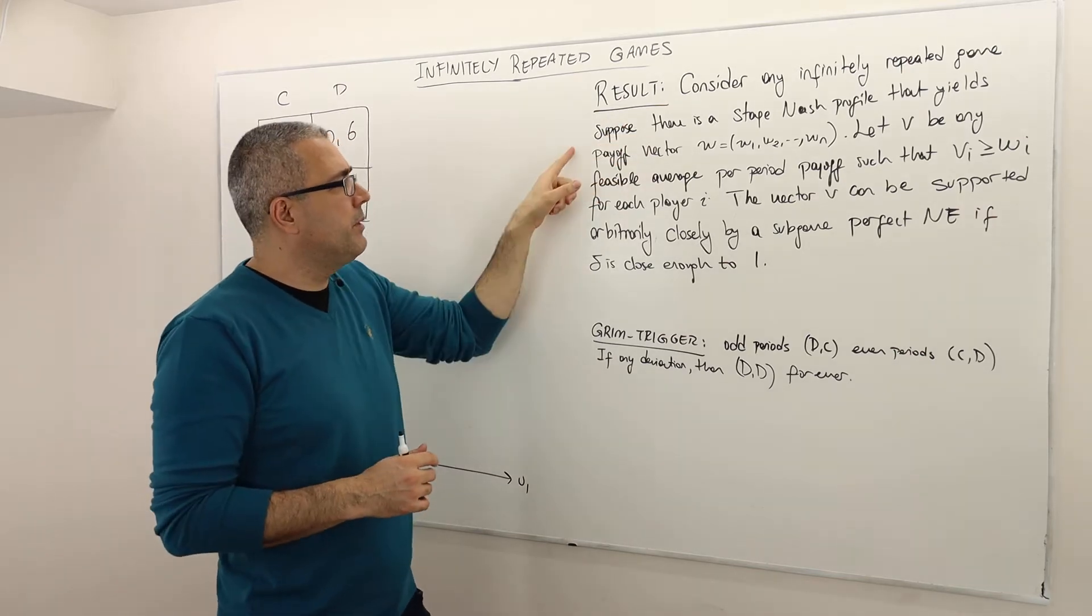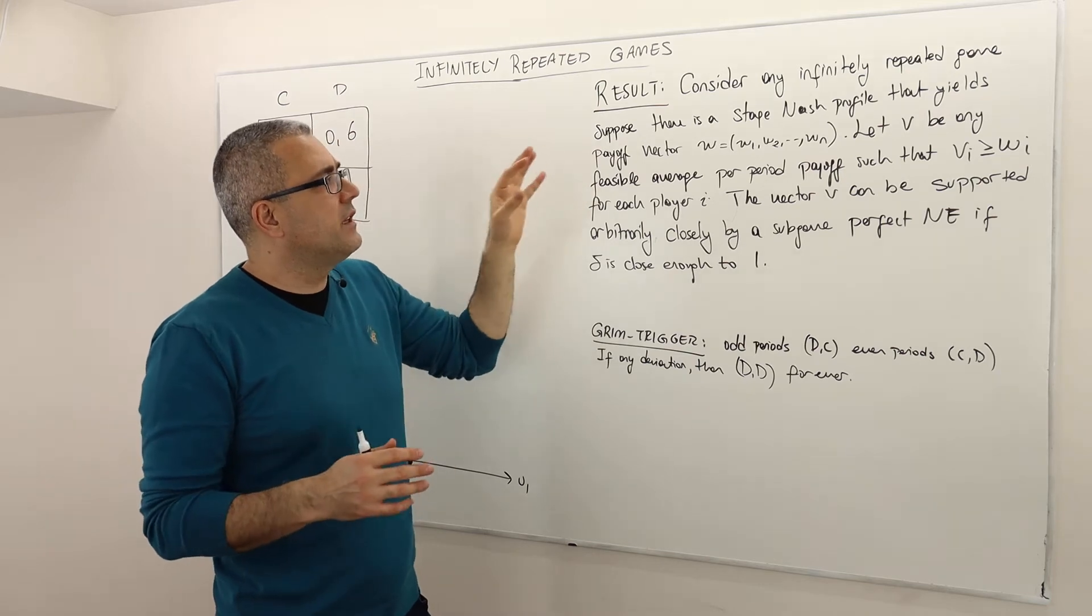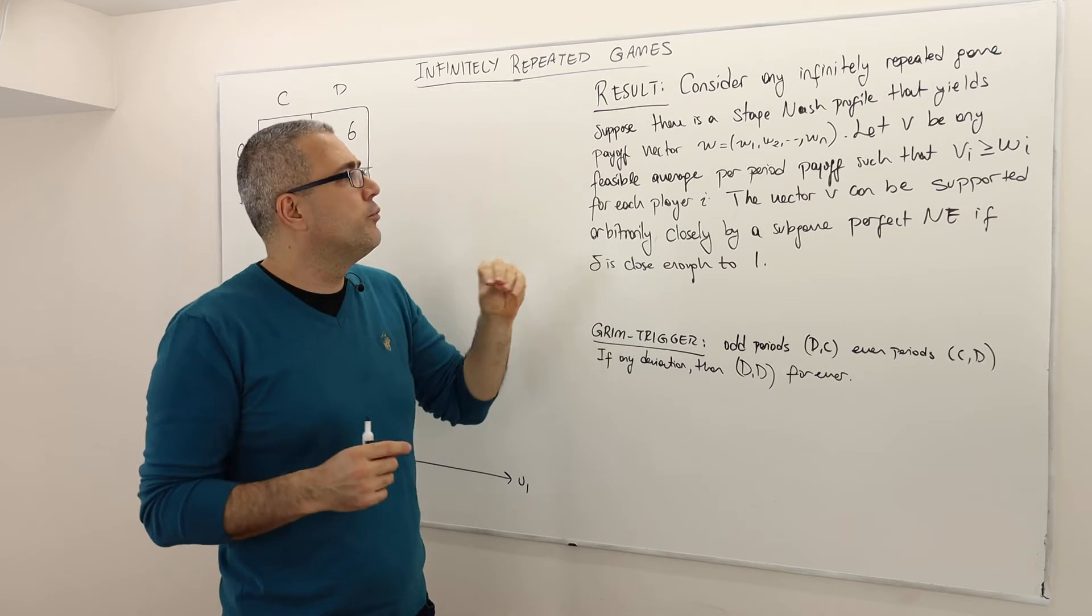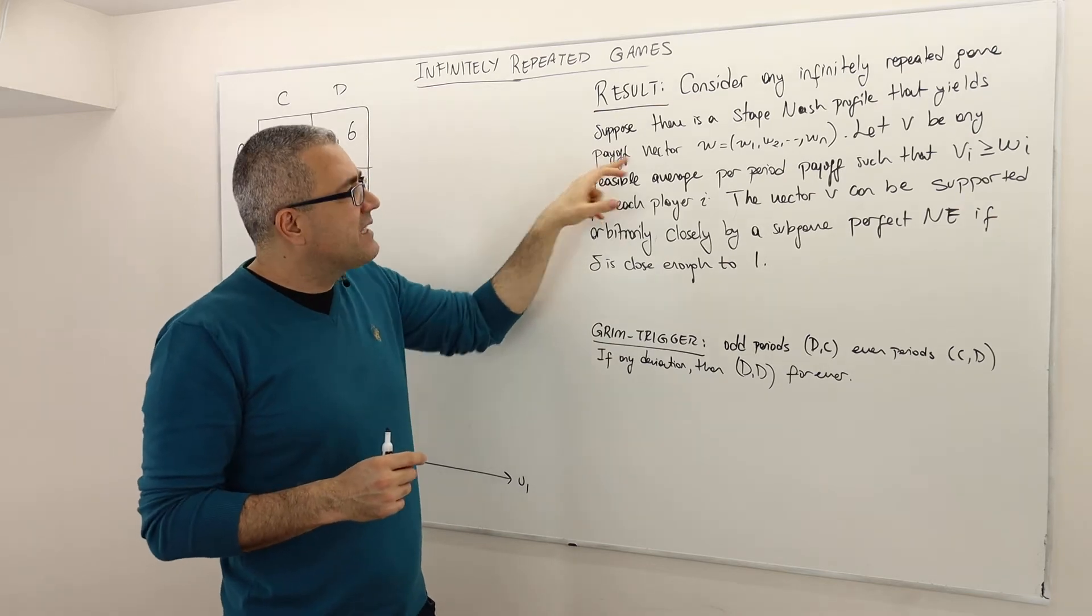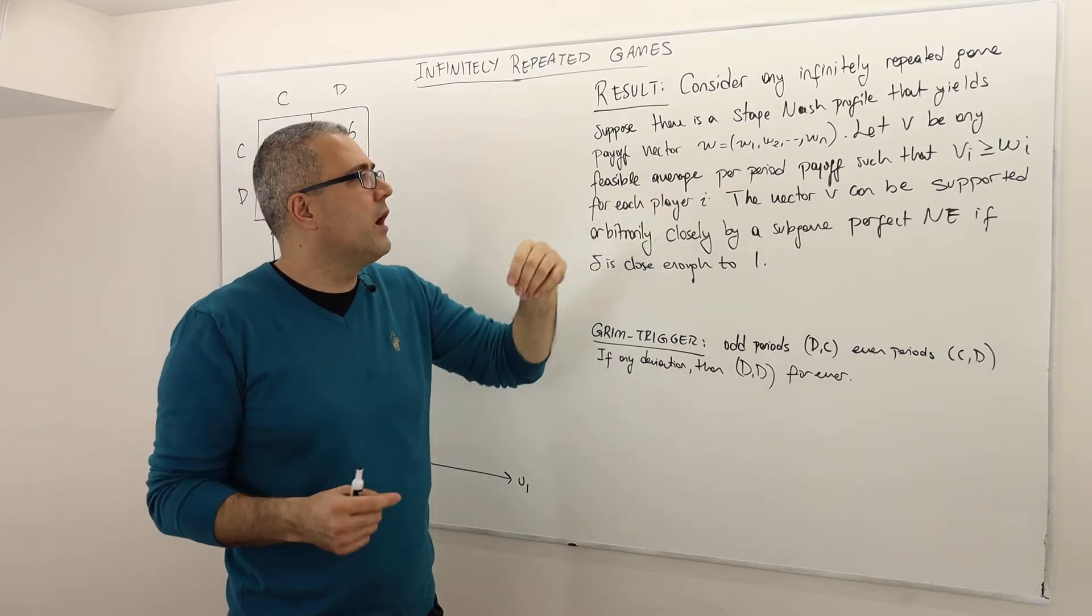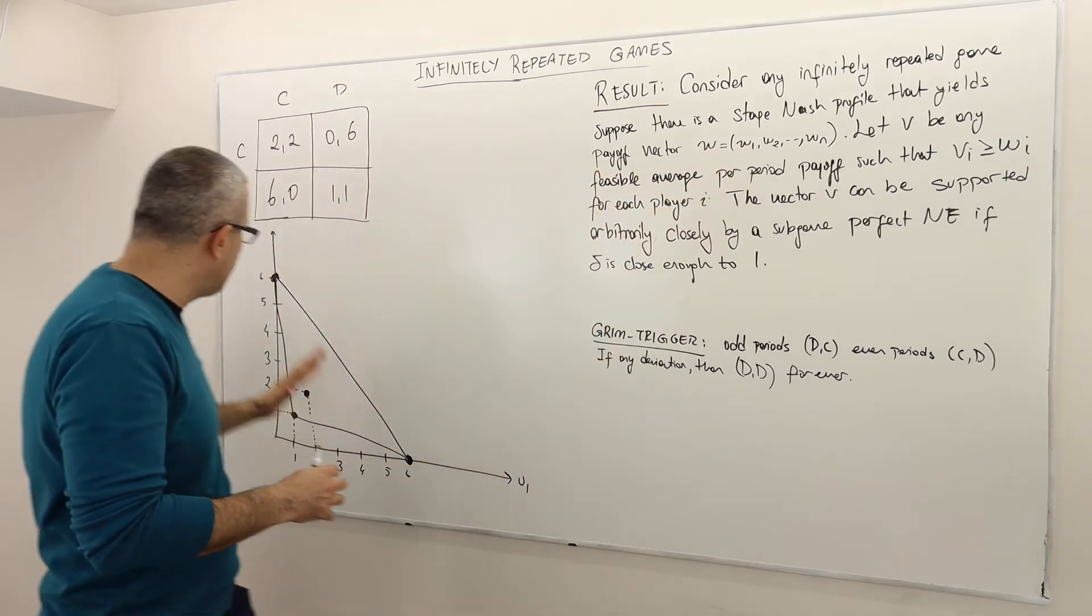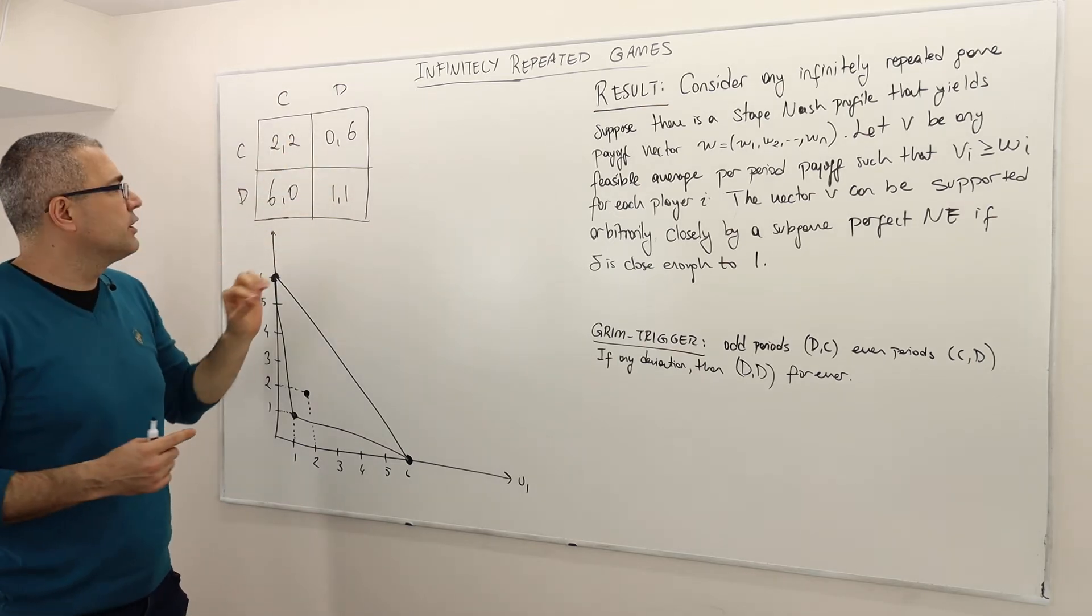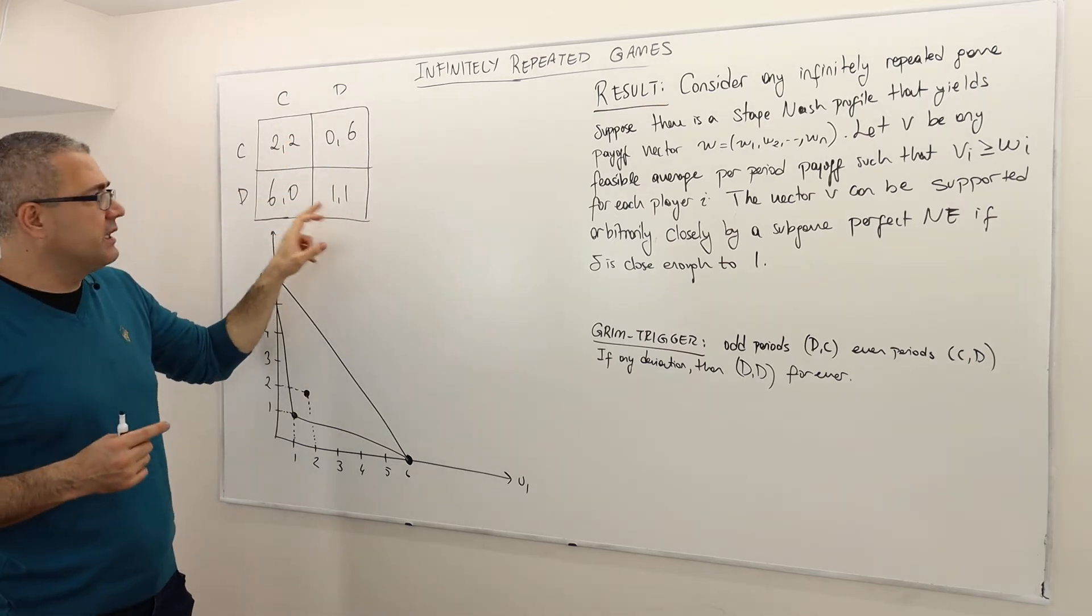It says the following: consider any infinitely repeated game, and suppose that the stage game has a Nash equilibrium which yields the following payoff vector. So player 1 gets W1, player 2 gets W2. For example, in this prisoner's dilemma, there's one Nash equilibrium and the W here is 1-1.